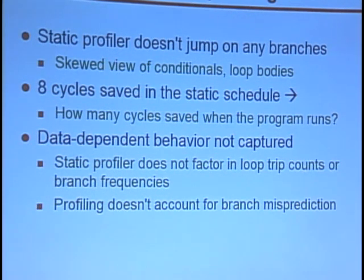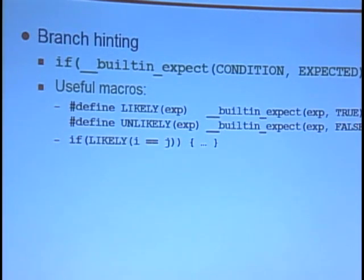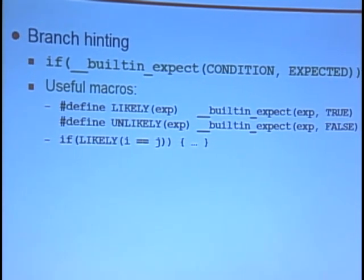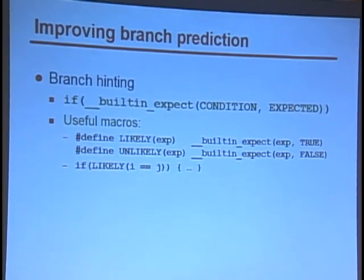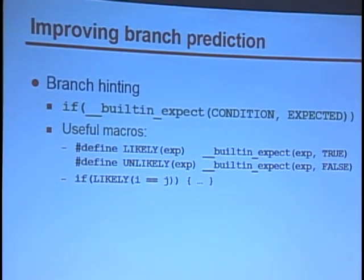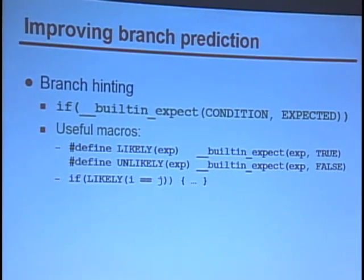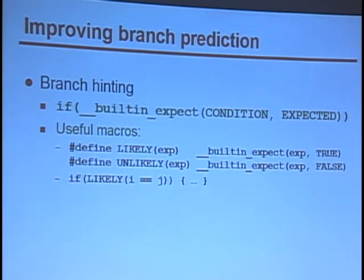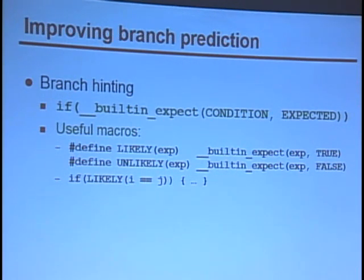Another thing to worry about that isn't manifested in static profiling predictions is branch prediction. The static profiler is just going to ignore all branches. Branch prediction is used to reduce the stall after a branch is taken by prefetching instructions — it guesses the direction the branch will take and starts prefetching instructions from the expected place. If your branch prediction is wrong, you're going to incur a pretty large penalty — on the order of 20 cycles while it flushes the pipeline and starts fetching instructions from the new place. On the other hand, if branch prediction is correct, there's no penalty at all and the next instruction will resume right after the branch.